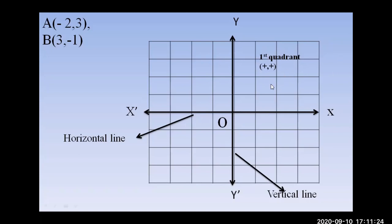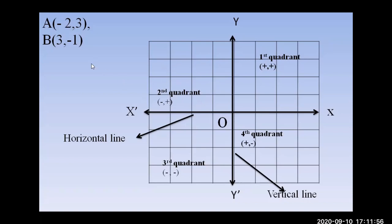The first quadrant has values plus-plus. The second quadrant is minus-plus. The third quadrant is minus-minus. The fourth quadrant is plus-minus. Point A equals (minus 2, 3): minus and plus means second quadrant. Point C equals (plus, minus 1): plus and minus means fourth quadrant.